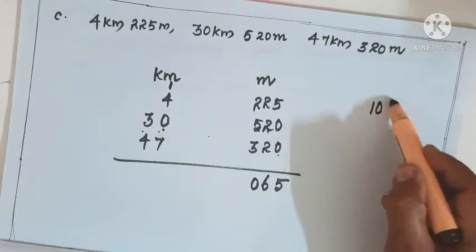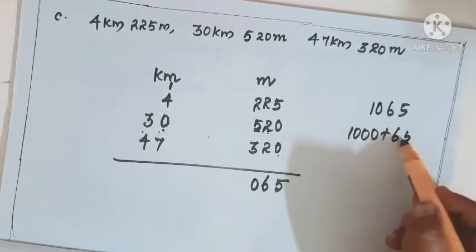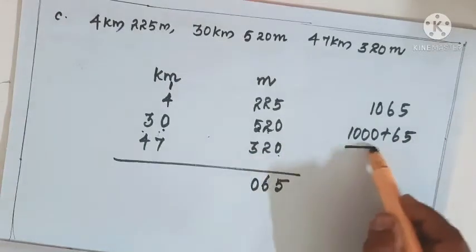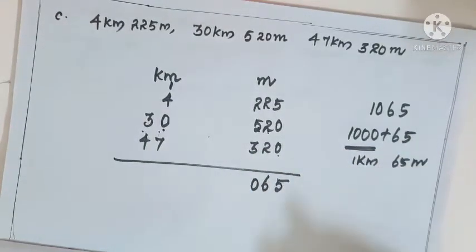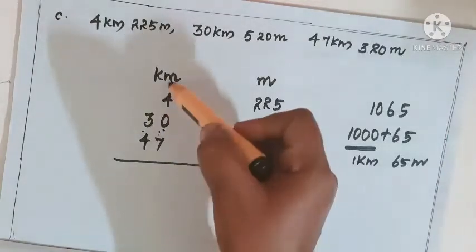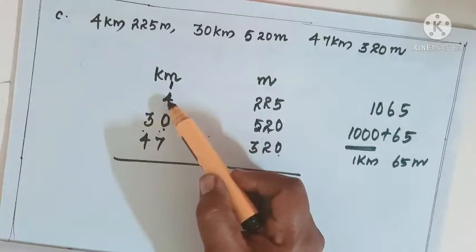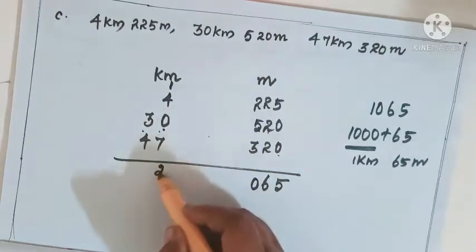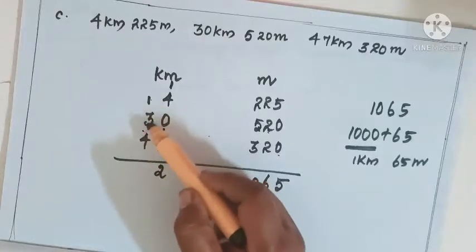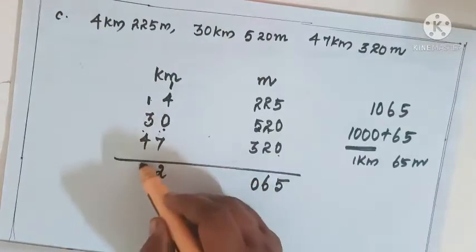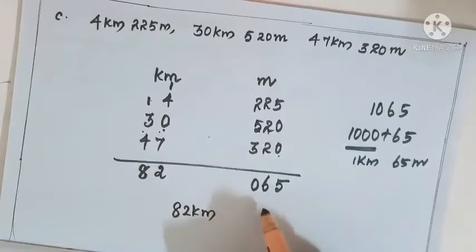Write 0 and carry over 1 in the kilometer column. 1065 meters means 1000 plus 65, so 1000 becomes 1 kilometer and 65 is the meter part. So carry 1 kilometer over. Then 1 plus 4 is 5, 5 plus 7 is 12, carry 1, so 4 plus 1 plus 3 is 4, 4 plus 4 is 8. The answer is 82 kilometers and 65 meters.